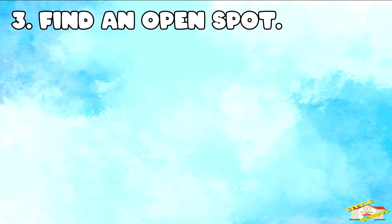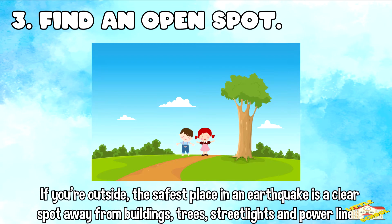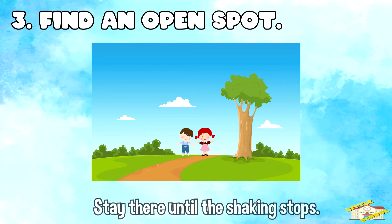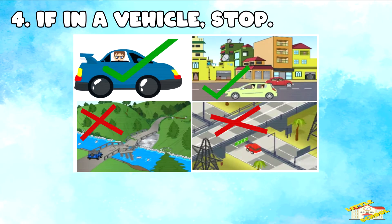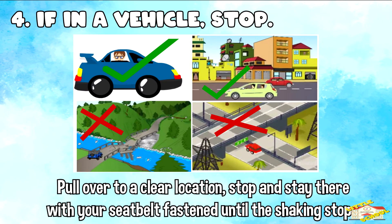If you're outside, find an open spot. The safest place in an earthquake is a clear spot away from buildings, trees, street lights, and power lines. Stay there until the shaking stops. If you are in a vehicle, pull over to a clear location and stay there with your seatbelt fastened until the shaking stops.